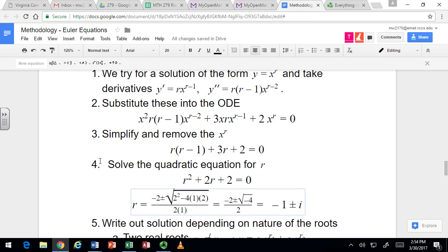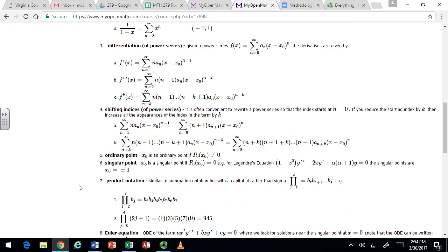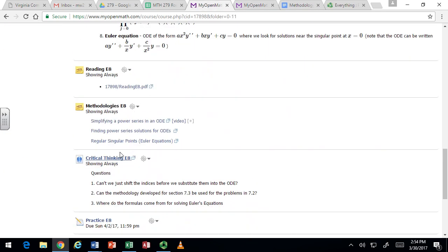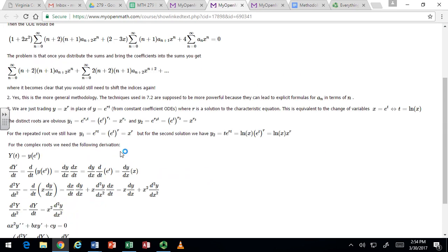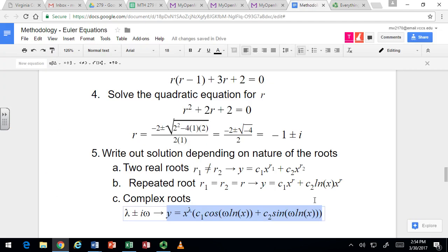So you get these complex valued solutions for r. And if we denote the real part as lambda and the imaginary part as omega, then the formula in terms of lambda and omega is given there. So again, there's a really cool derivation here in critical thinking E8 where it's explained there. It's also explained in the book.